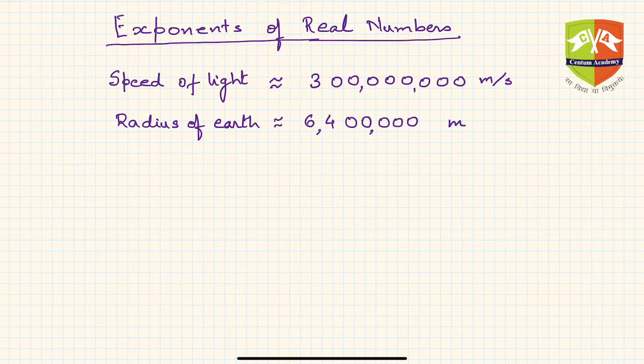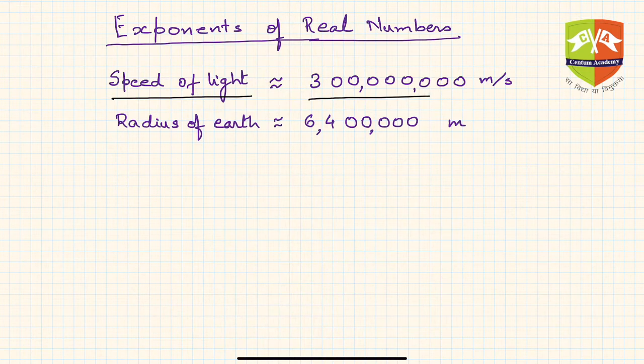To begin with, let us consider these two data points. Speed of light: light travels at a speed of 300,000,000 m/s. The number is so big that even counting the zeros is difficult. If you see, it's three followed by eight zeros - around 300 million meters per second.